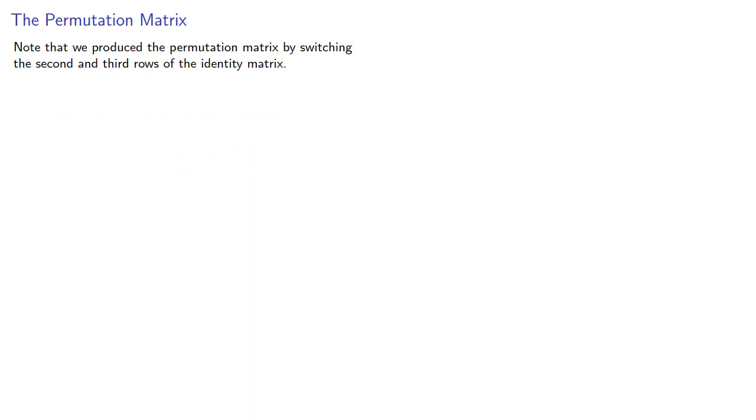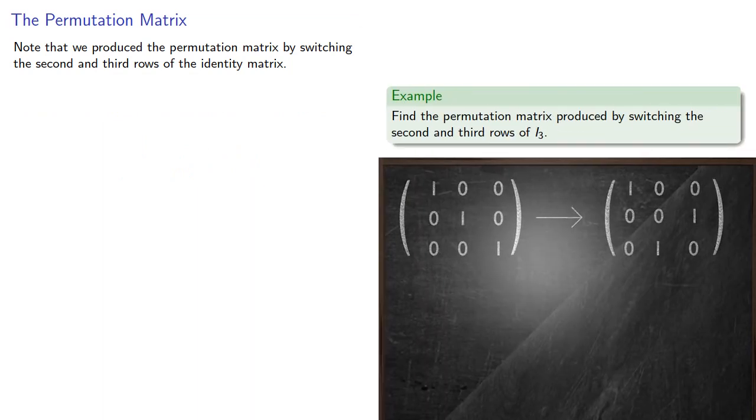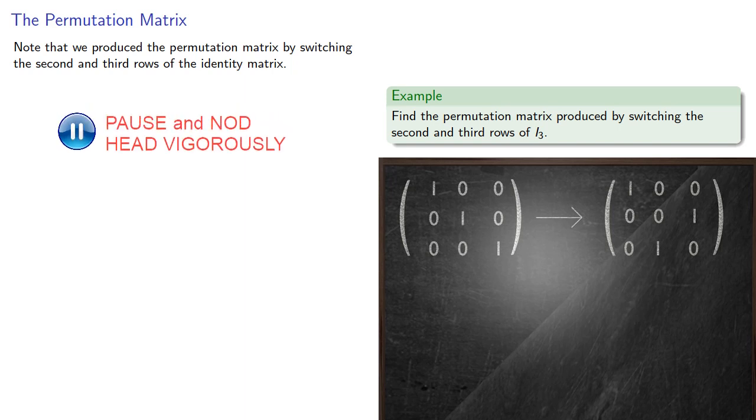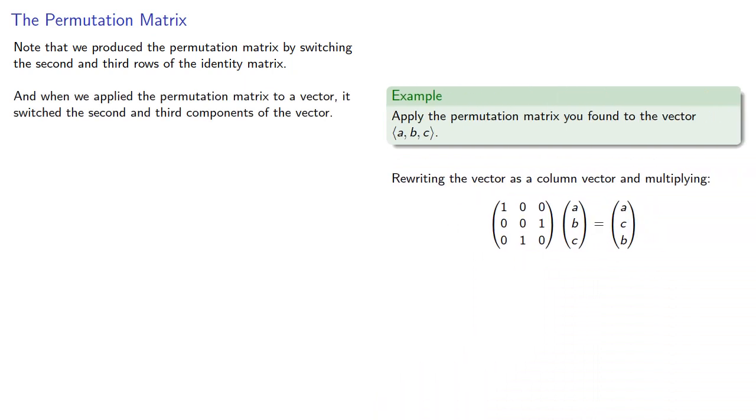Notice that we produced the permutation matrix by switching the second and third rows of the identity matrix. And when we applied the permutation matrix to a vector, it switched the second and third components of the vector.